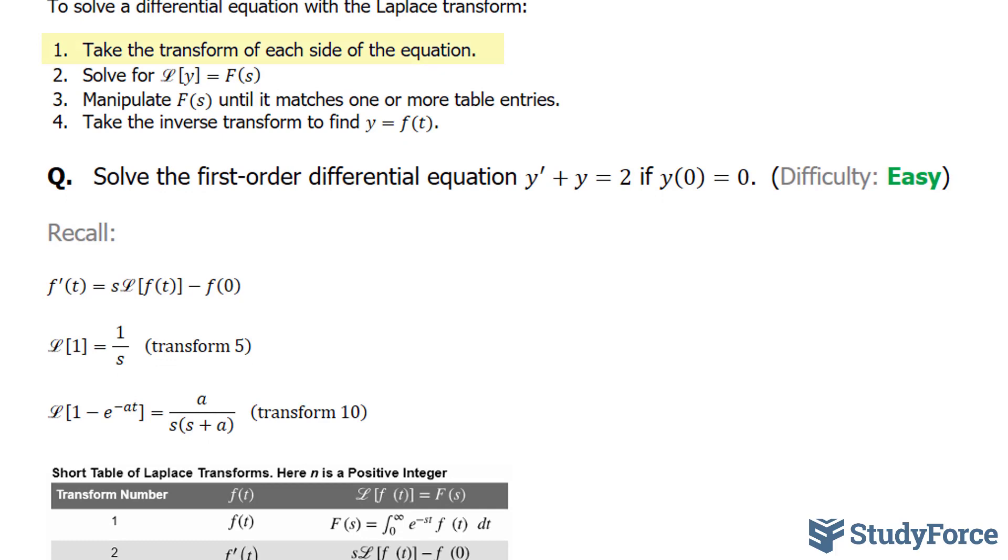Step number one tells us to take the Laplace transform of each side of the equation. So, I'll take the Laplace transform of y prime plus the transform of y is equal to the transform of 2. Step number one is accomplished.